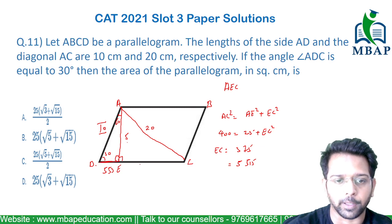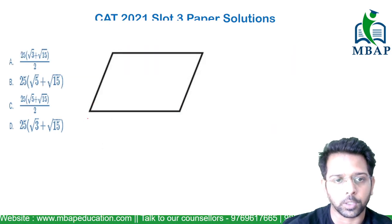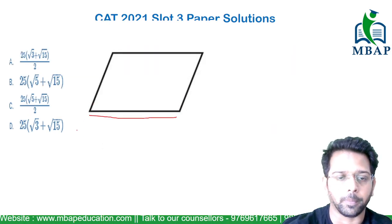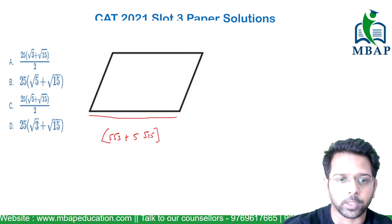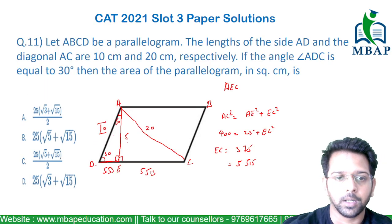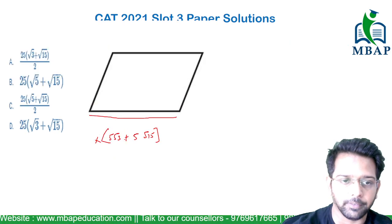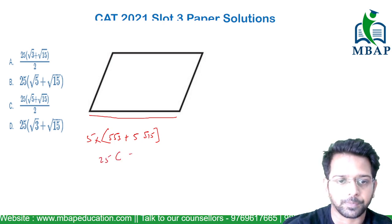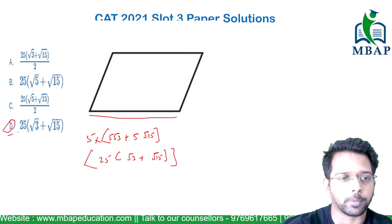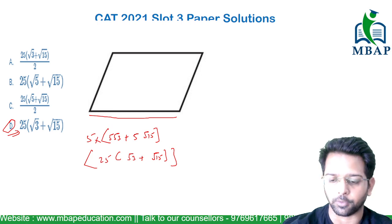Now we know AE is 5 and EC is 5√15. The whole base DC of the parallelogram will be DE + EC = 5√3 + 5√15. The height of the parallelogram is AE = 5. So the final area will be 5 × (5√3 + 5√15) = 25(√3 + √15). That is the final answer for this question.